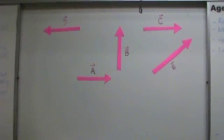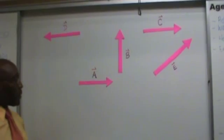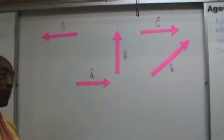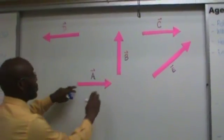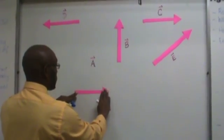Now let's suppose we wanted to add vectors A and C. As indicated in the first video, the first thing you want to do is to place both vectors head to tail.